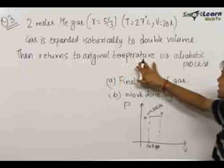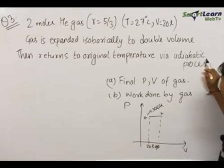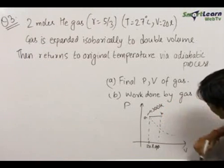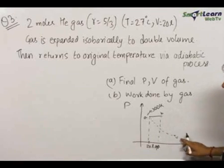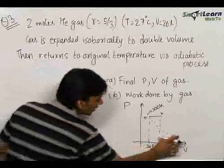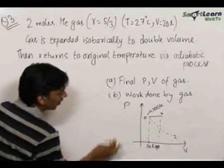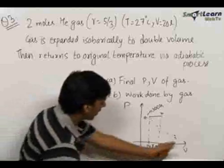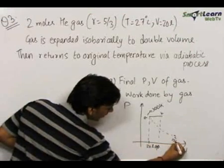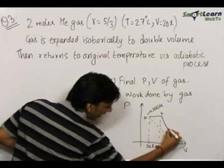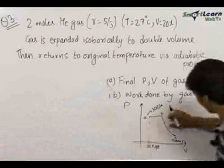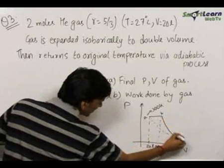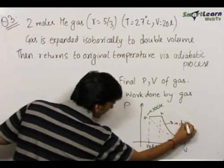The gas returns to its original temperature via an adiabatic process. Since it is returning back to the original temperature, let us draw an isotherm. The point C to which the gas finally comes must lie on this isothermal curve of 300 Kelvin, because in a pressure-volume graph the isotherms are all like this. The temperature at point C will be 300 Kelvin, and the gas came through an adiabatic process to point C from point B. So the gas went from A to B and then came back to C from B via an adiabatic process.